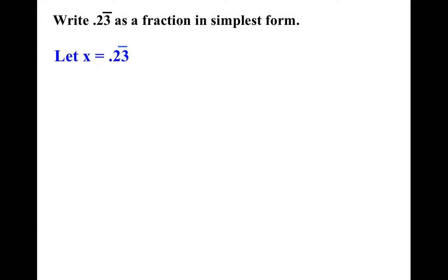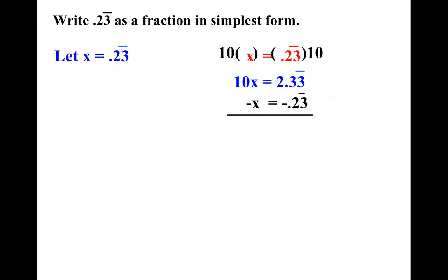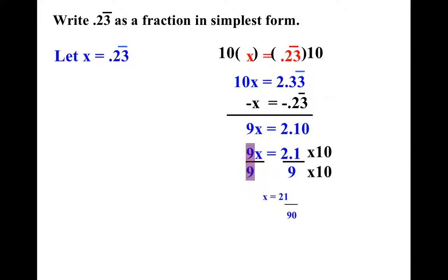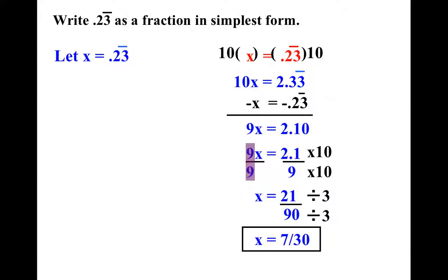Two last ones. Notice only the 3 is repeating, so this is 0.2333333333. I only multiply by 10 because I only want to move the decimal one spot — because I only want those 3's to become 0's. Don't believe me? Check it with a calculator.